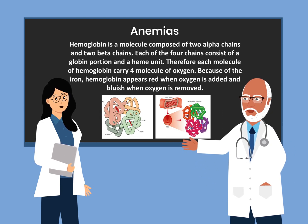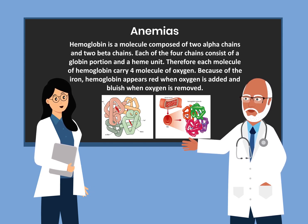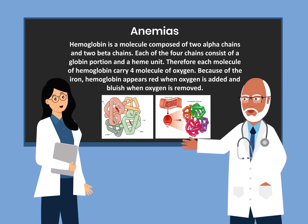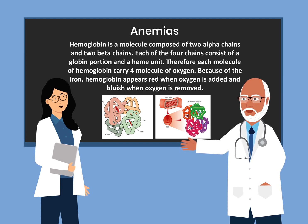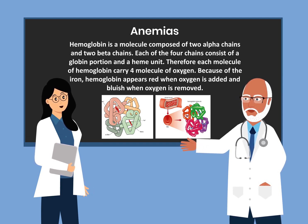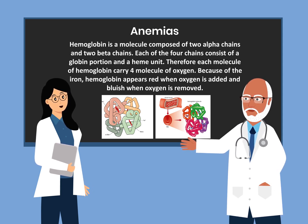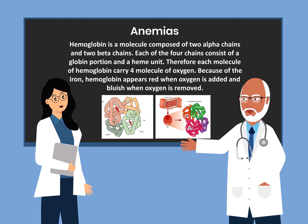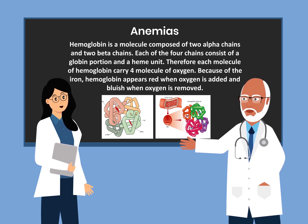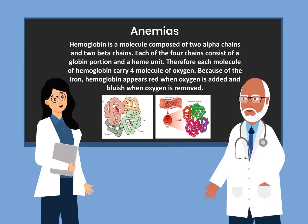Hemoglobin is a molecule composed of two alpha chains and two beta chains. Each of the four chains consists of a globin portion and a heme unit. Therefore, each molecule of hemoglobin carries four molecules of oxygen. Because of the iron, hemoglobin appears red when oxygen is added and bluish when oxygen is removed.